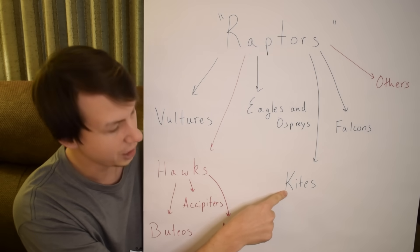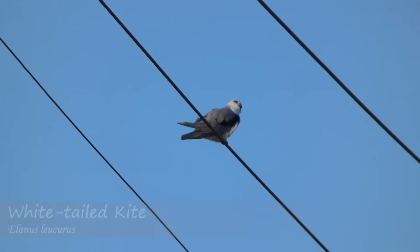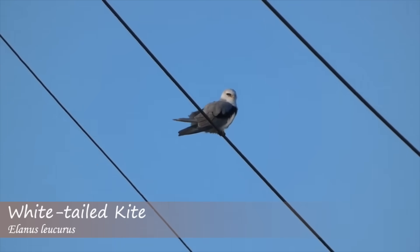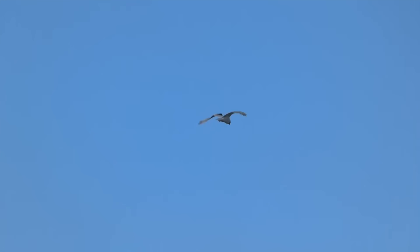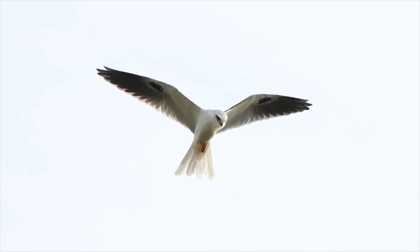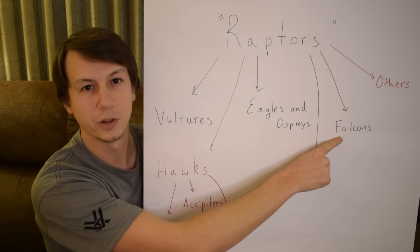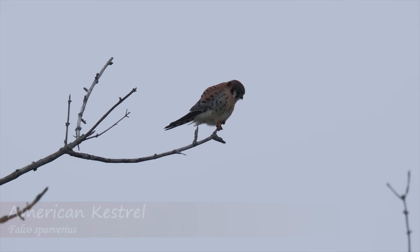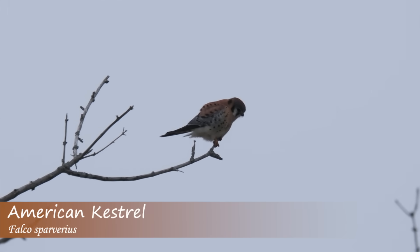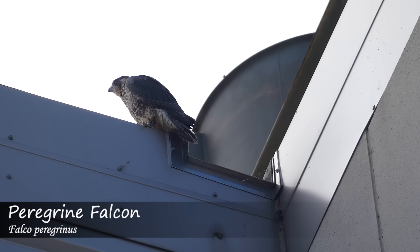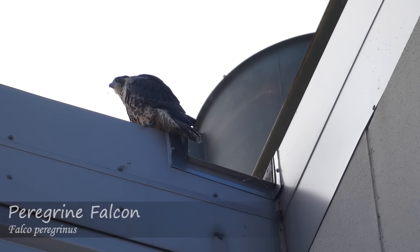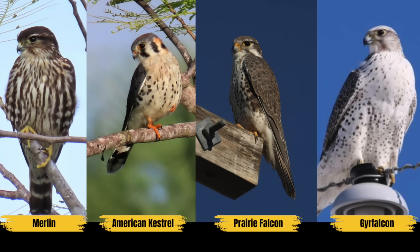Then you also have the kites. They're very streamlined and dynamic with very pointed wings, and they'll do this thing called kiting — hovering in place — though other raptors do it as well. There are a couple different species of kites in the U.S. Then you have the falcons, known for their speed and streamlined wing patterns. They will often be perched up looking for food and do some crazy dives to catch it. You have the peregrine falcon, the American kestrel, and the merlins.